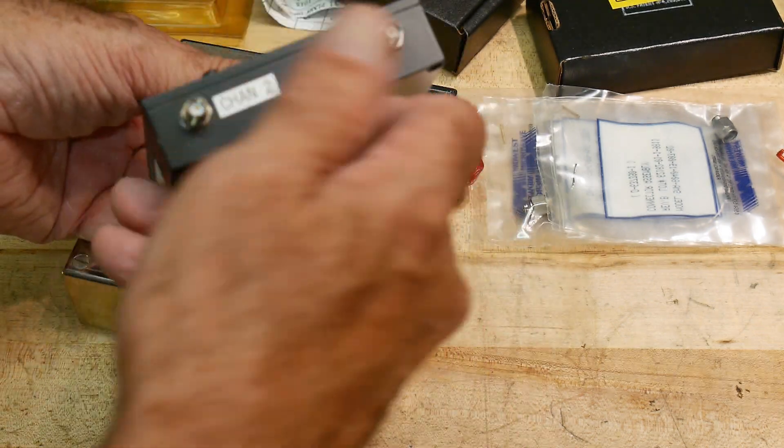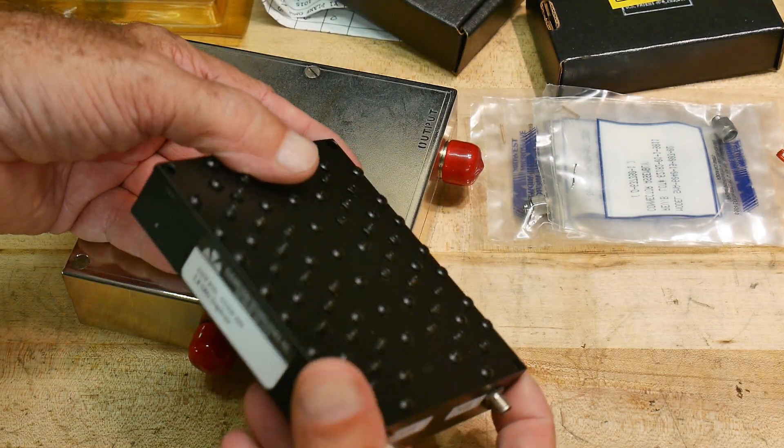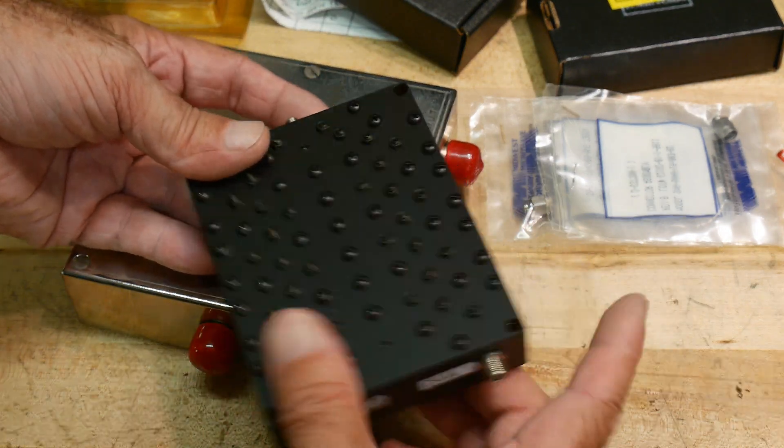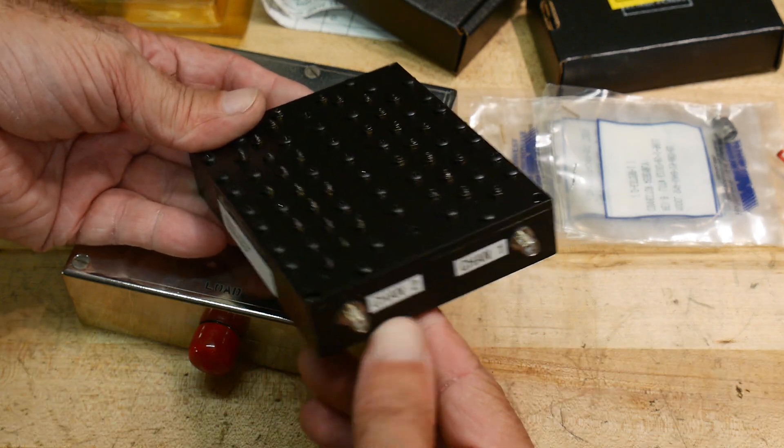This antenna and channel 1, channel 2. So this might be a diplexer. So these are two filters, a filter over here and a filter over here. So it's a diplexer. That's way, way cool.